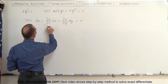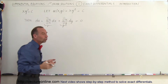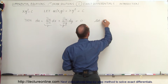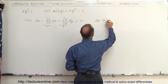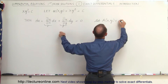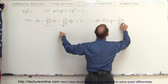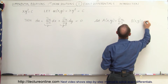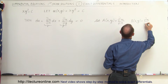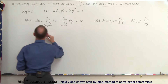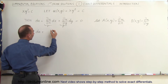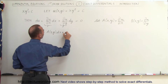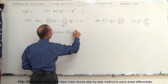We can look at each portion and say those themselves are some functions of x and y. Let a, which is a function of x and y, be equal to the partial of u with respect to x. Let b, which is also a function of x and y, be equal to the partial of u with respect to y. So this can then be written as du equals a(x,y) times dx plus b(x,y) times dy.